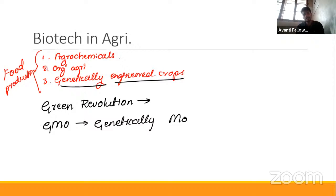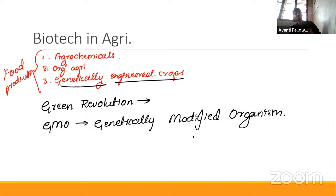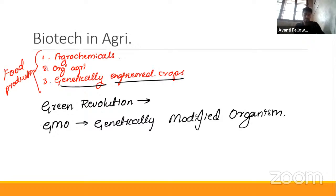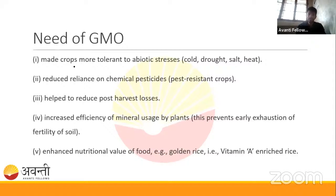Genetically modified organisms are organisms where the host has genes from another organism. For example, if you take the gene from a firefly that produces light and add it into a plant, that plant glows — that's a GMO. Any organism that has genes from outside is called a genetically modified or transgenic organism.